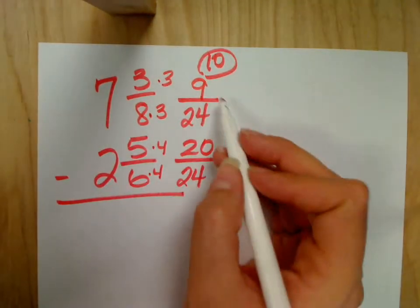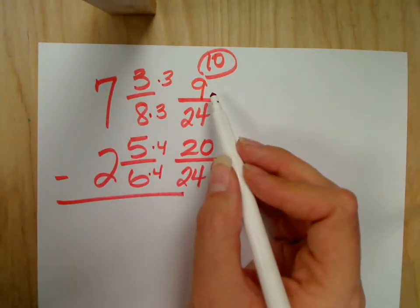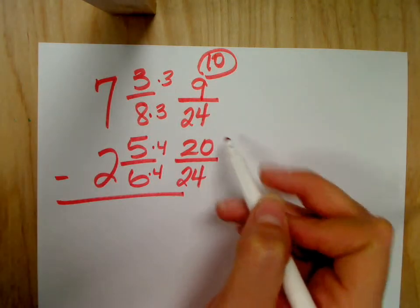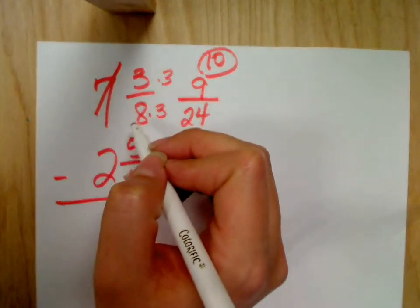Now, I'm always going to run into this situation for number 10. 9 minus 20, you can't do. So, you're always going to borrow, just like you did for number 9.